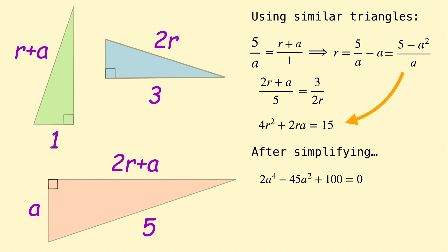2A to the power of 4 minus 45A squared plus 100 equals 0. And this is basically a quadratic. Well, it's a quartic, but you can substitute x squared for A to the power of 4. And then it becomes a quadratic that you can solve. You can use the quadratic formula or a quadratic solver or even possibly factorizing. I don't think I even tried to factorize this.